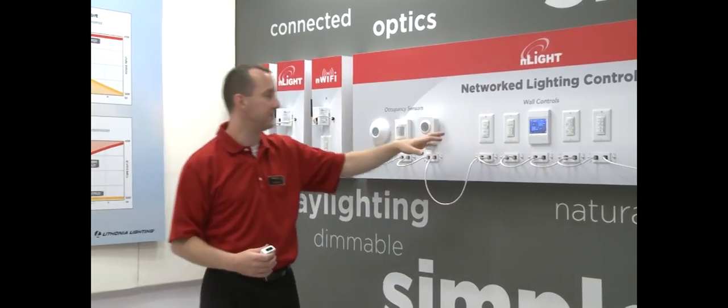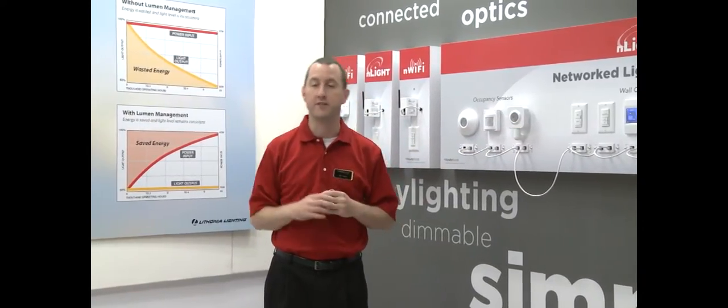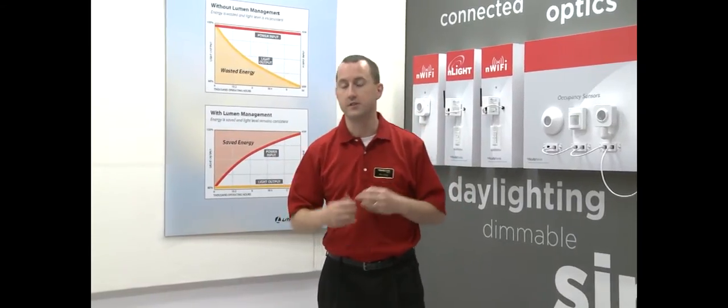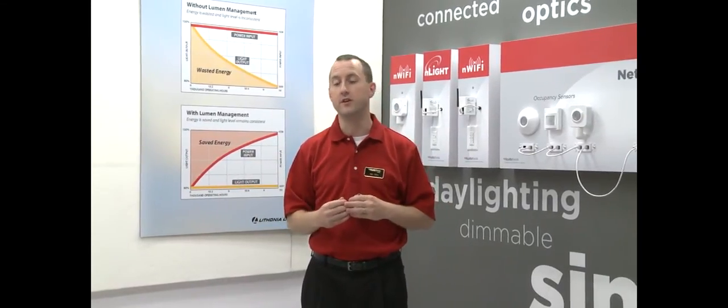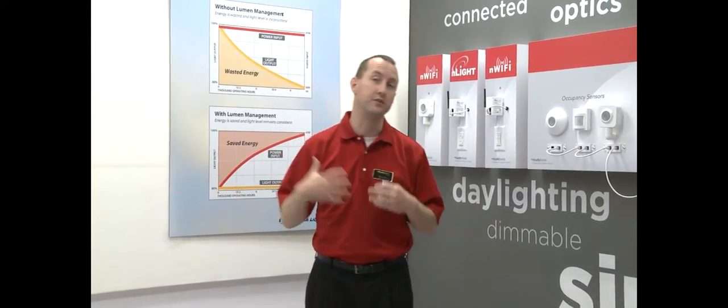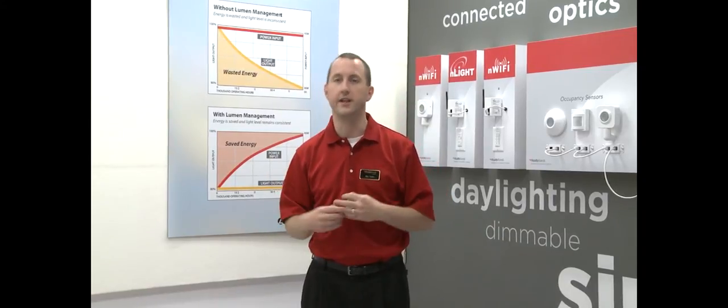All these devices are powering off of the bus power provided by the fixture. So from a labor standpoint, there's significant savings because your contractor's not having to run any extra power wires to any control devices. They're only running the power wires to the fixtures, which they would have been doing anyway.